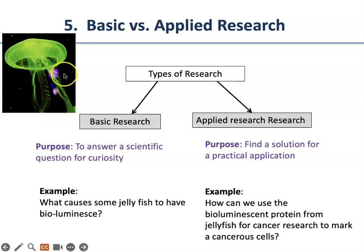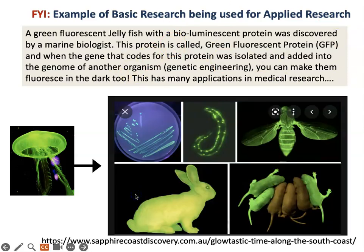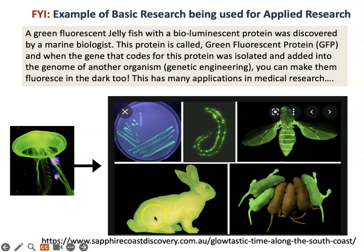Somebody discovered this bioluminescent protein — the green fluorescent protein, or GFP. Then someone asked: how can we use this bioluminescent protein from jellyfish in cancer research, Alzheimer's research, or to mark diseased cells? That would be an example of applied research. Basic and applied research talk to each other — they are not segregated; they work together. For example, these are yeasts and a worm containing the green fluorescent protein, tagged with another protein using genetic engineering. This is a fruit fly, or Drosophila, having a protein connected to GFP.